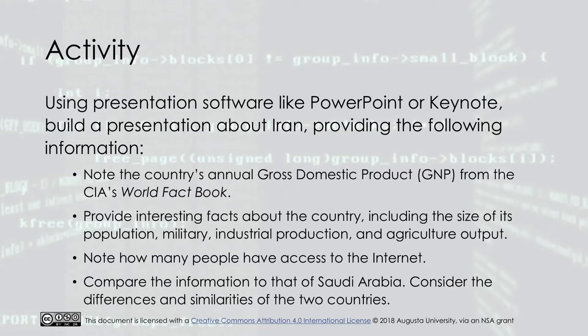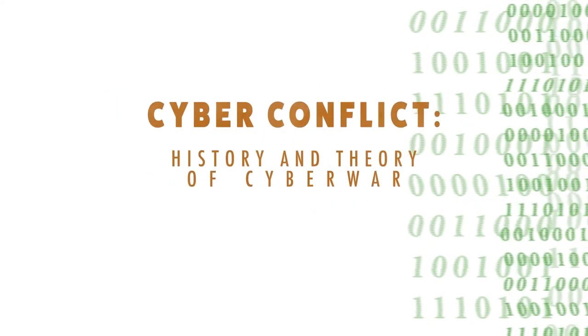The activity for this module asks that, using presentation software like PowerPoint or Keynote, you build a presentation about Iran providing the following information: note the country's annual gross domestic product (GDP) from the CIA's World Factbook; provide interesting facts about the country including the size of its population, military, industrial production, and agriculture output; note how many people have access to the internet; and compare the information to that of Saudi Arabia, considering the differences and similarities of the two countries.